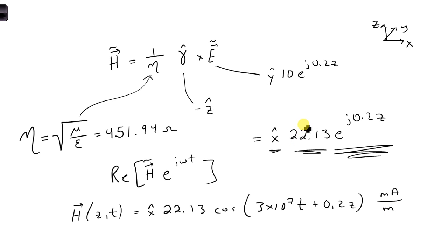So yes, I probably did not specify that here. This is in milli, so I'll put that over here, milliamps per meter. So when you calculated this, you probably got 0.02213. So that's accounted for here by saying milliamps.